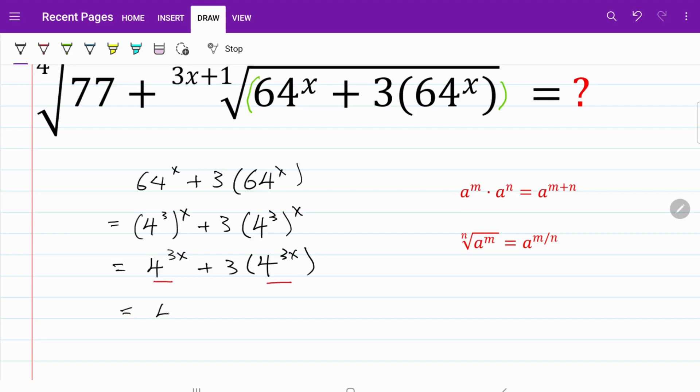So now what I have is 4 to the power of 3x. Obviously, when 4 to the power of 3x is multiplied by itself, the result is 1.